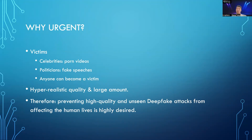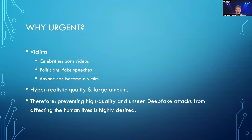Why can anyone become a victim? Because we post photos and videos on social media all the time — on WeChat, Weibo, Instagram, and Facebook. Most posted materials are publicly available, even to non-friends. Someone could acquire your public videos, use a deep learning face-swapping model to study your facial features, and perform face swapping on you. So this is crucial and anyone can become a victim.